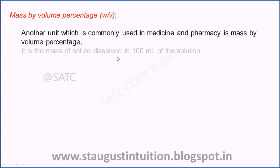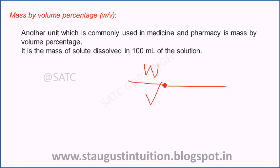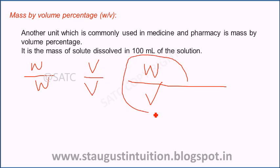Volume percentage is used in medicine and pharmacy. Mass-volume percentage and volume-by-volume percentage are the combinations. For mass-volume, the solute mass in grams is per 100 mL of solution — so weight of the solute divided by volume gives the mass-volume percentage.